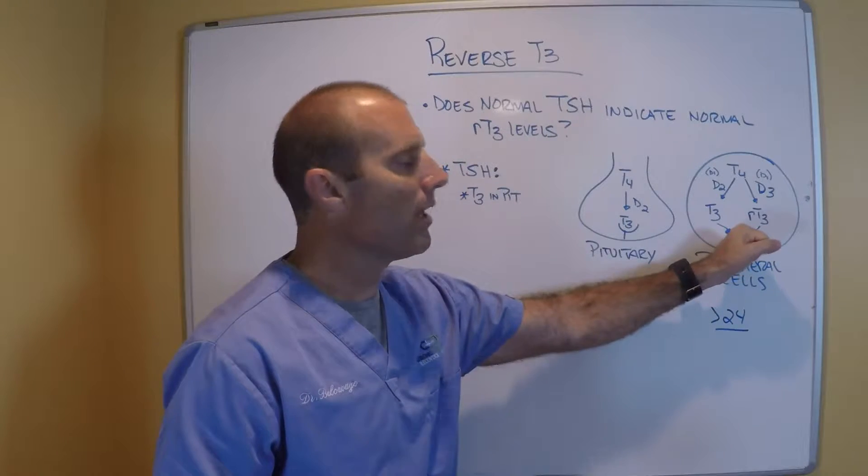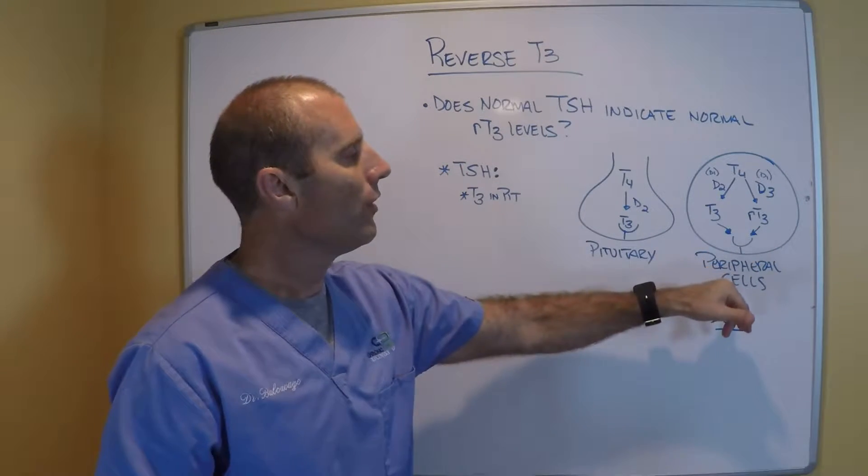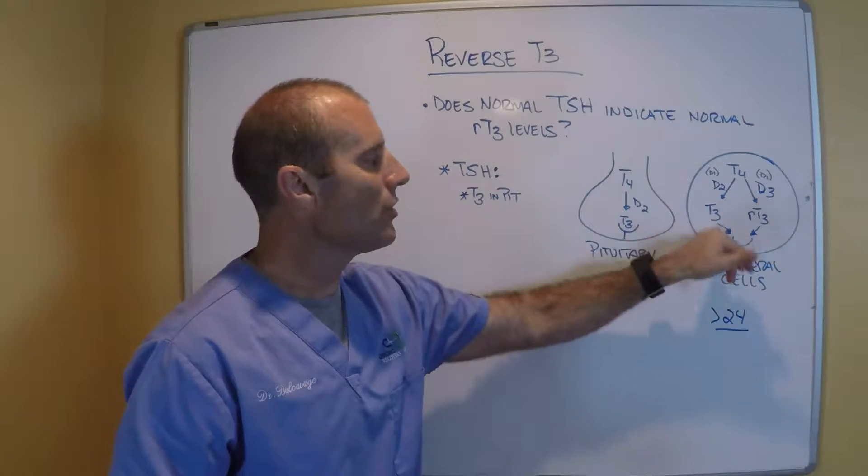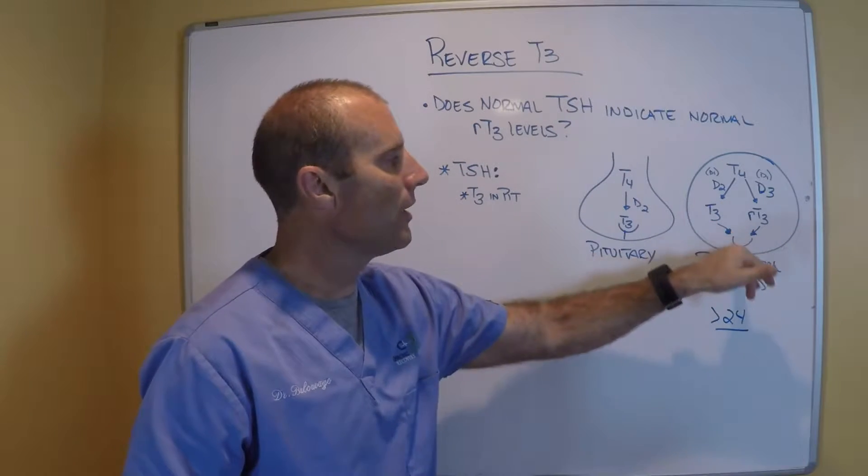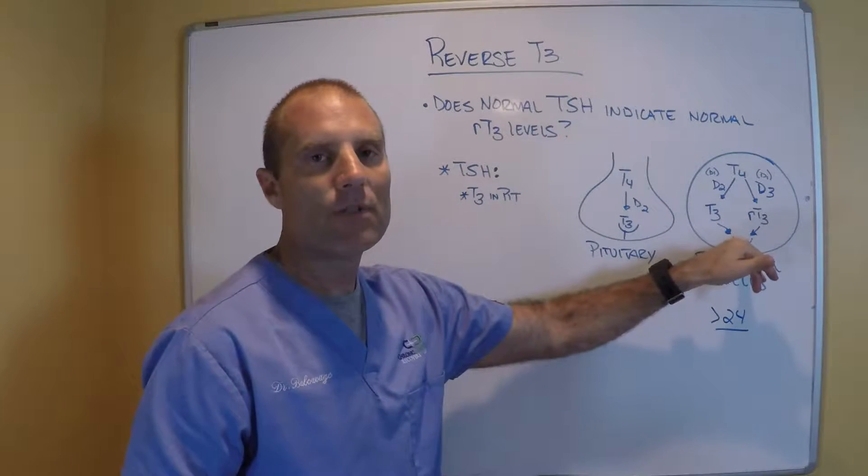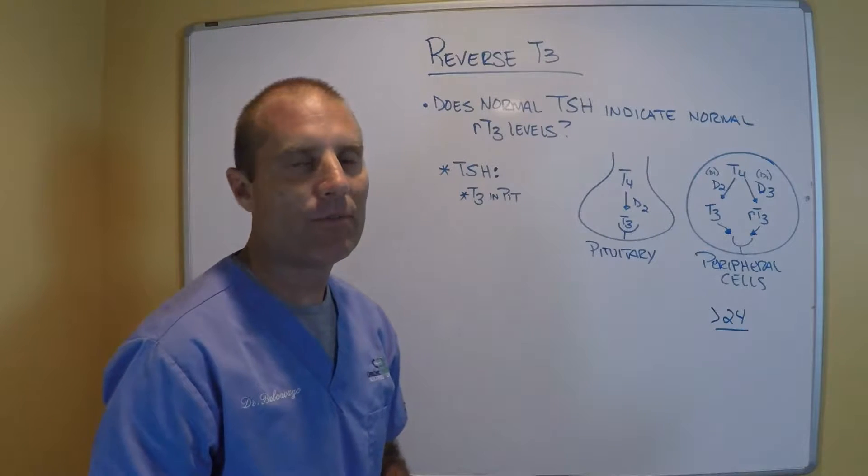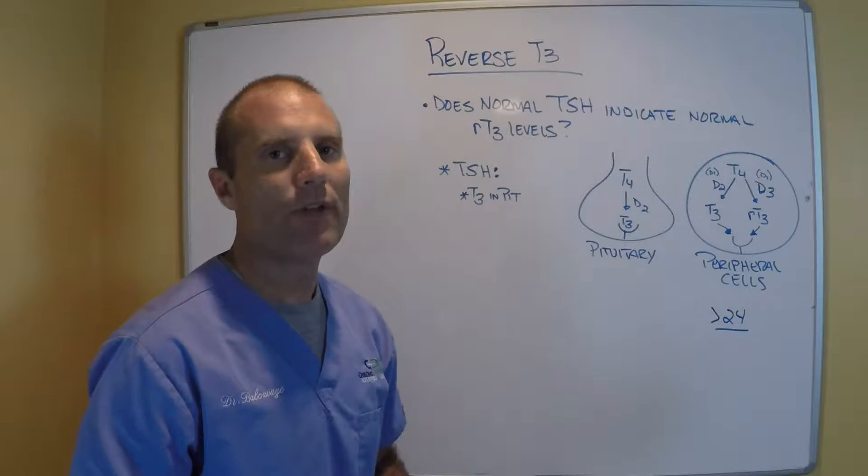That reverse T3 was blocking the peripheral cell T3 receptors. So even if they were making some T3, it couldn't get into the receptor to stimulate metabolism, which is why they still had hypothyroid symptoms.